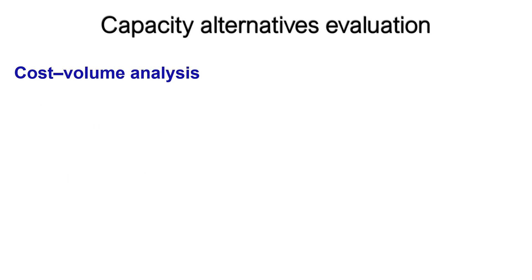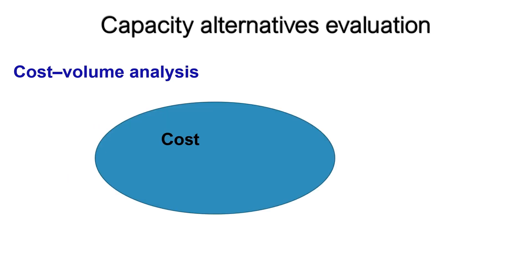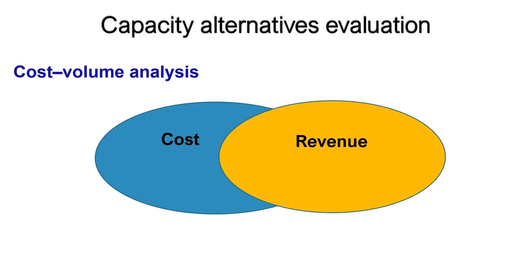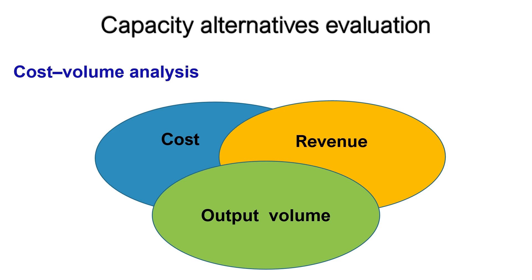Cost-volume analysis focuses on relationships between cost, revenue, and volume of output. The purpose of cost-volume analysis is to estimate the income of an organization under different operating conditions. It is particularly useful as a tool for comparing capacity alternatives.